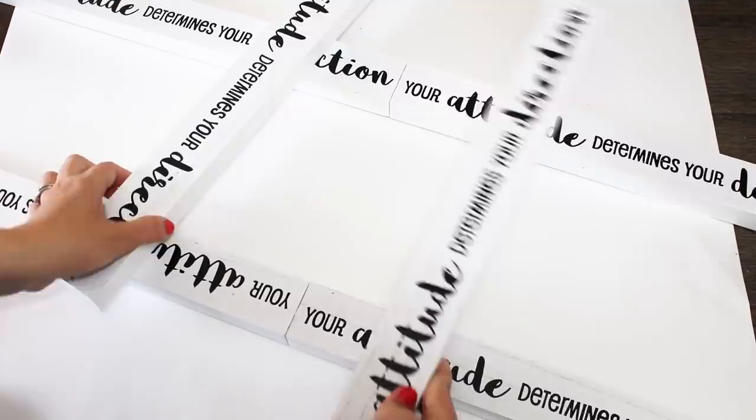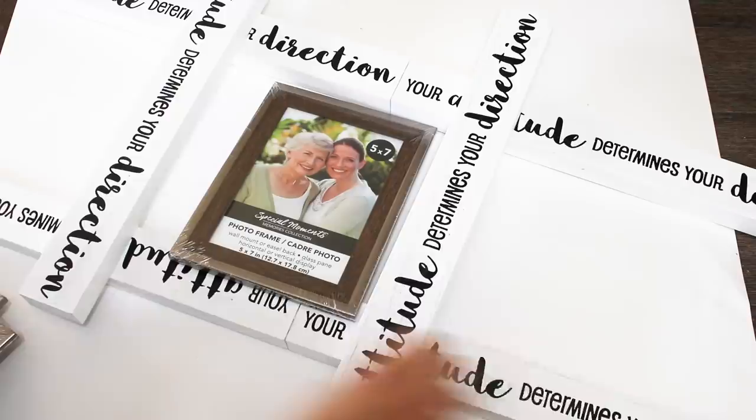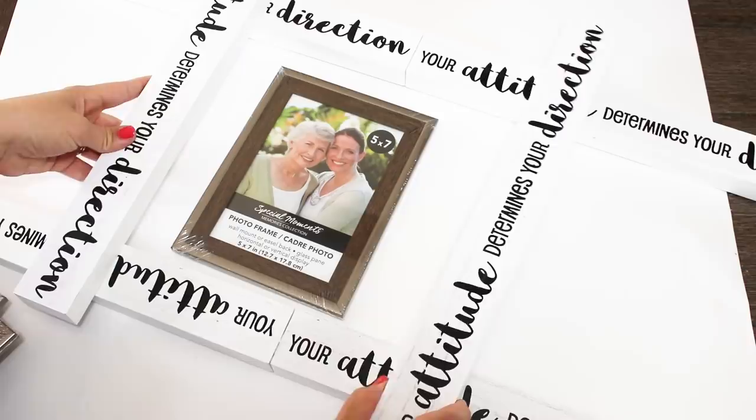To create the steps of the ladder I am placing two more of the wooden signs the opposite direction, and then going ahead and putting my photo frames in the center of each little square just to make sure that I have enough room and get everything laid out.